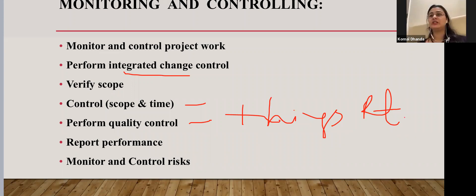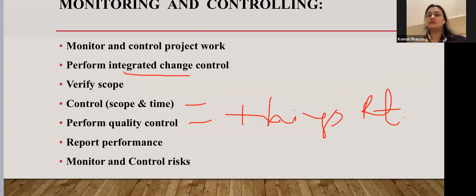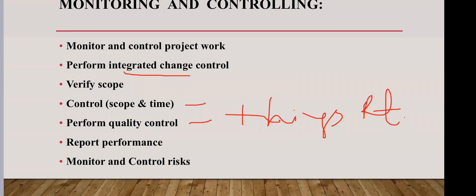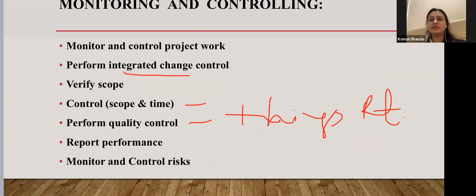Reporting performance means communicating to everyone involved — top management and subordinates — how the project is going and what progress is being made. We are collecting, processing, and disseminating information regarding the performance of the project: the stats, the progress measurements, and the forecast, communicating everything to all the stakeholders who have a stake in the project.